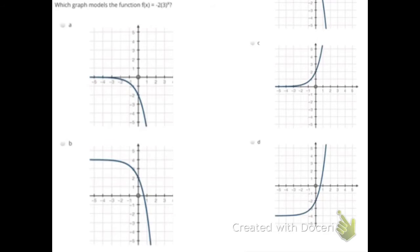Let's move on to number two. Number two says which graph models the function f of x equals negative two times three to the x power. When you have a negative a value, then you have to flip your graph.